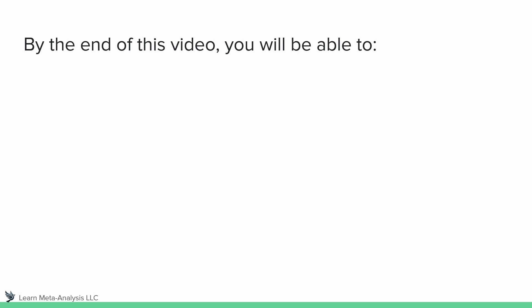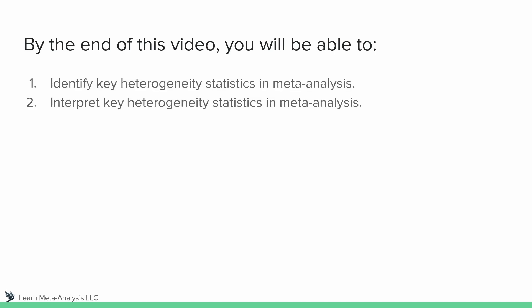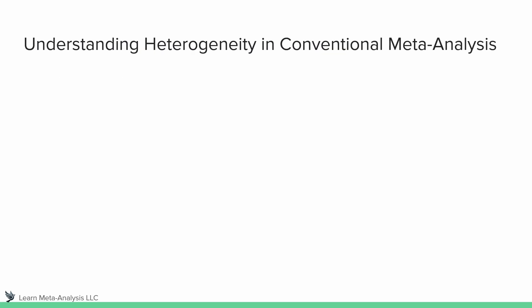By the end of this video, I want you to be able to identify key heterogeneity statistics that we see in meta-analysis, as well as interpret them. Let's go ahead and get started. We'll work on understanding heterogeneity in a conventional meta-analysis first — that two-level model, which is what we see most often in the educational sciences as of now.